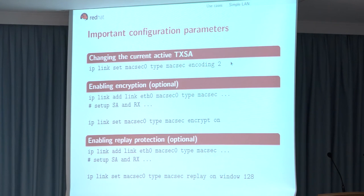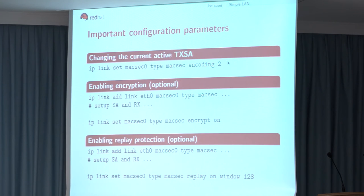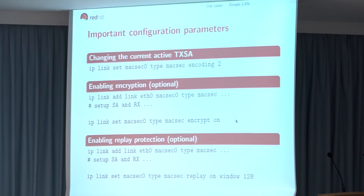When the 32-bit packet number is exhausted, you need to switch to a different secure association. When the packet number would wrap, the secure association disables itself so you don't reuse the same packet number with the same key. You then set up a new secure association with a new key and switch to it. To enable encryption on an already-created link, you can just set 'encrypt on' at any time, transparently while packets are flowing. Same with replay protection — set 'replay on' with the desired window size.